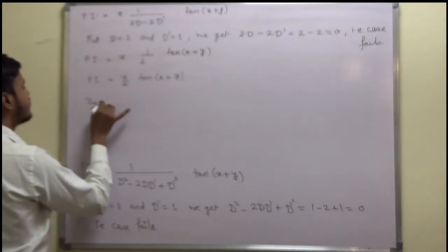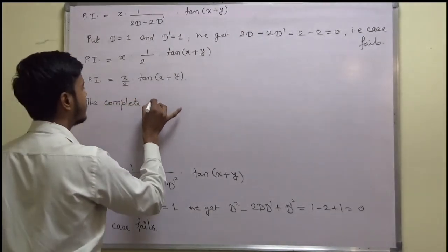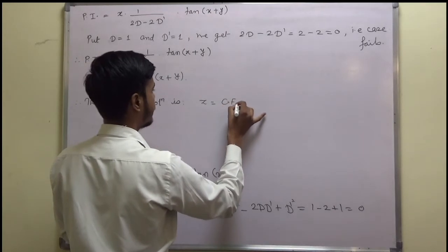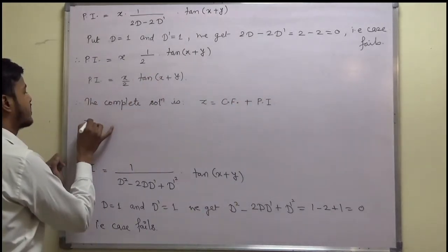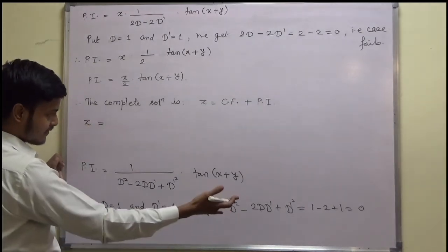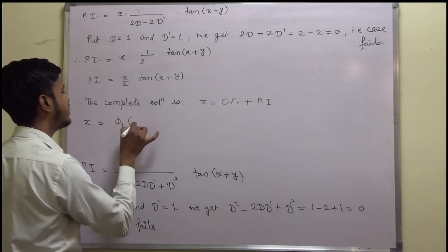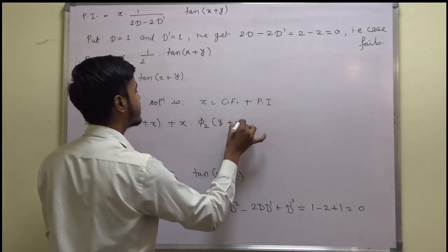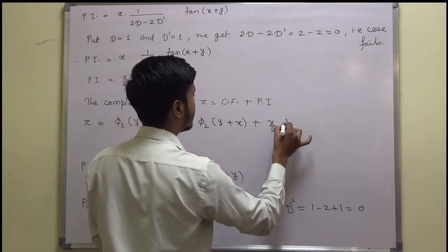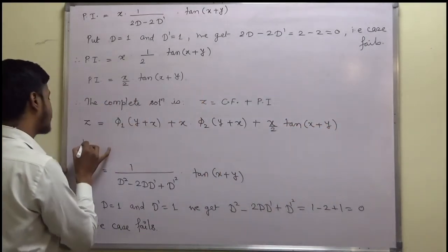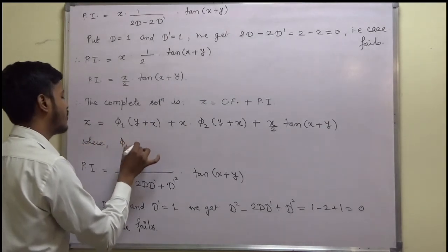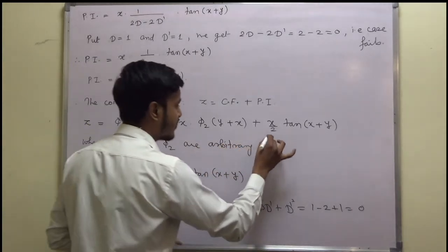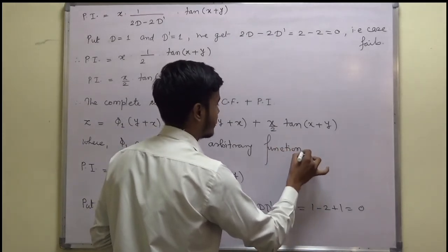Therefore, the complete solution is z = CF + PI, that is z = phi_1(y + x) + x · phi_2(y + x) + (x/2) · tan(x + y), where phi_1 and phi_2 are arbitrary functions. This completes the solution of this problem.